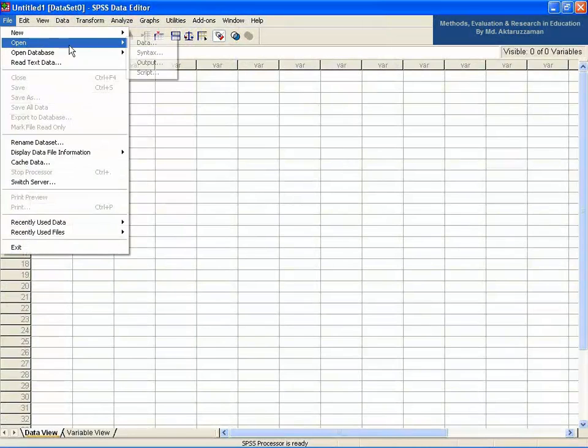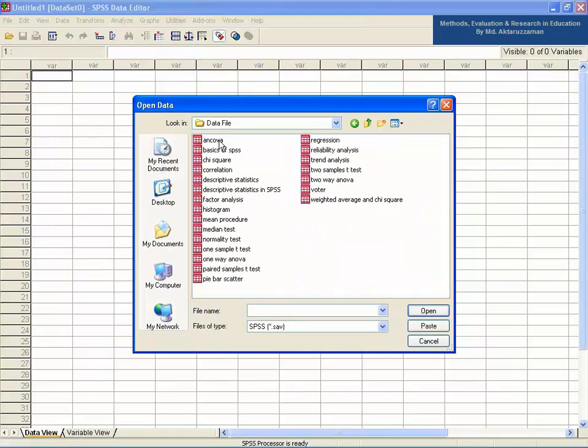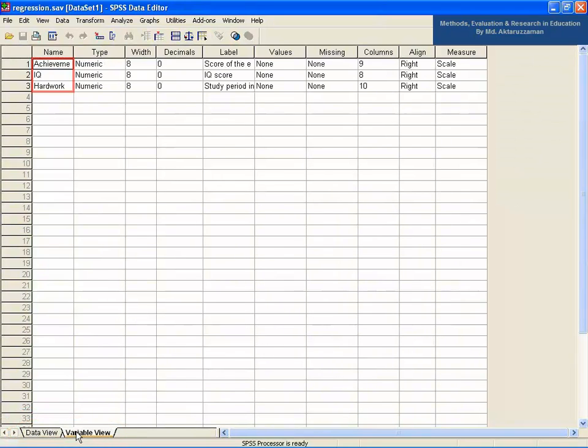Let's see the SPSS data editor window at the screen. Now, go to File, then Open Data, then Data File under SPSS evaluation folder and open the file 'regression' in the SPSS data editor. Just click it. The file is shown in SPSS editor in the data view.